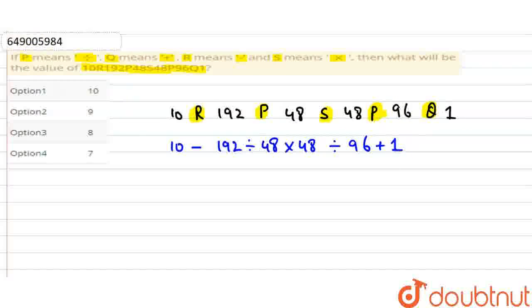Now we have BODMAS rule according to division. We have 10 minus 192 divided by 48, multiply by 48 divided by 96 plus 1. 48 to 48 cancel out.